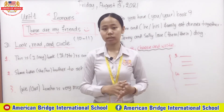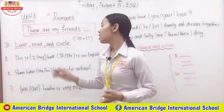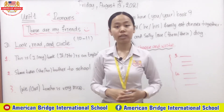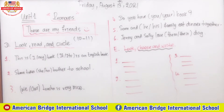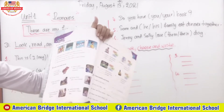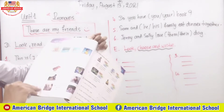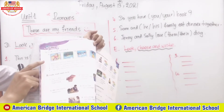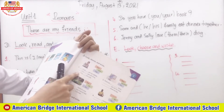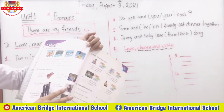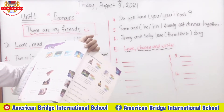Today we will practice more exercises on pages 10 and 11. If you have your book, you can open to pages 10 and 11. Last time we finished Section B on page 9 and Section C on page 10. Today we will move to Section D and Section E altogether, to understand more about our grammar points.